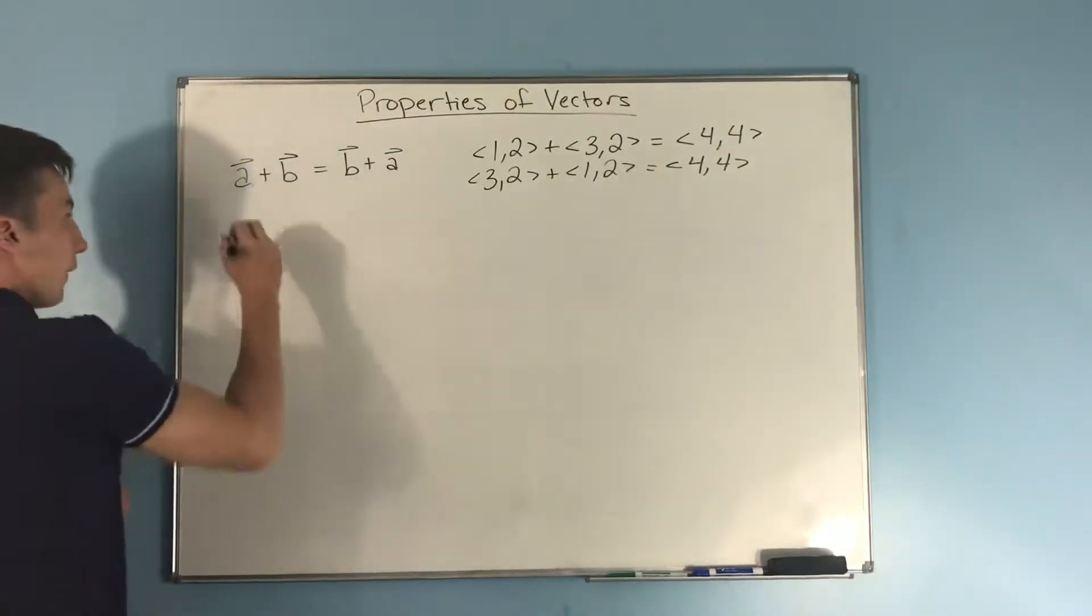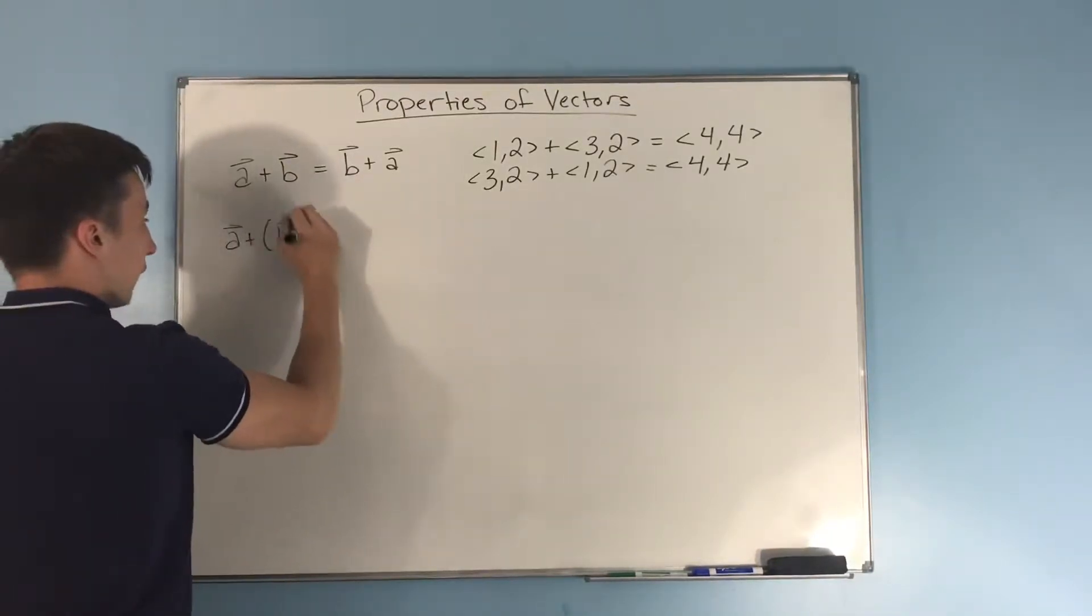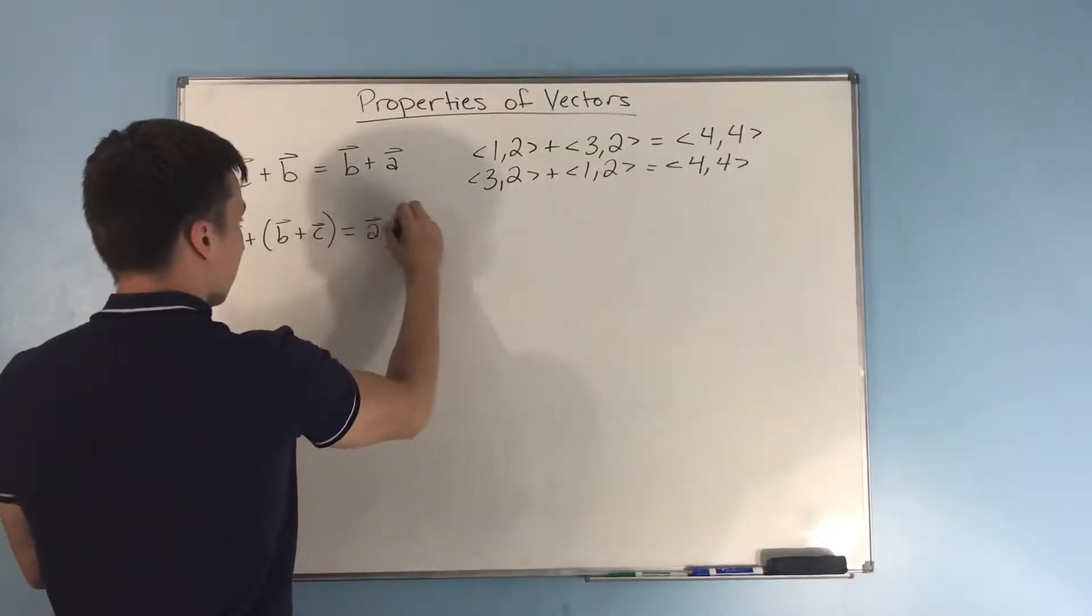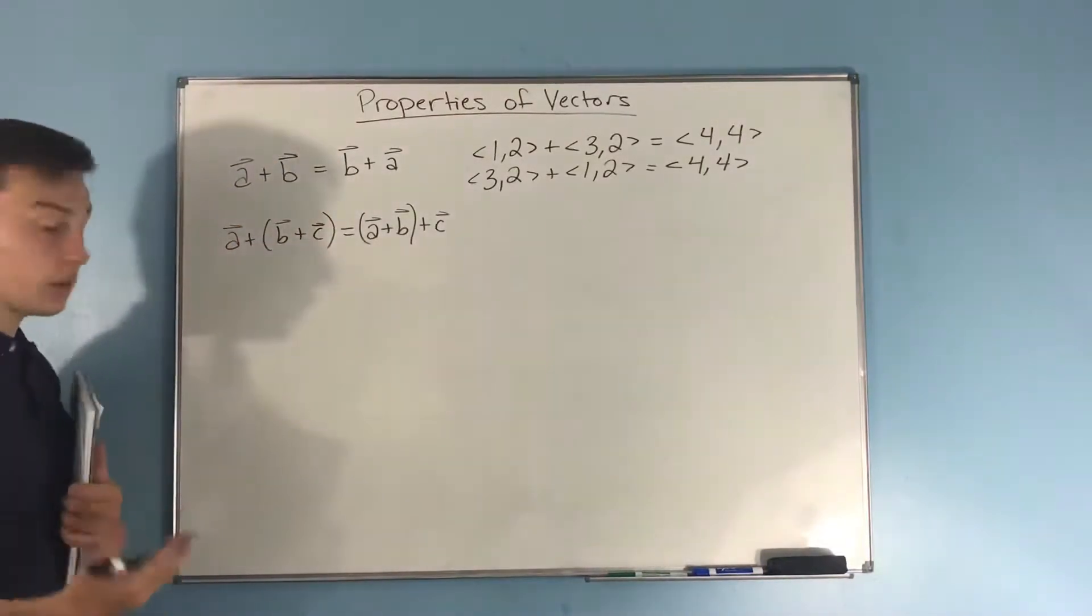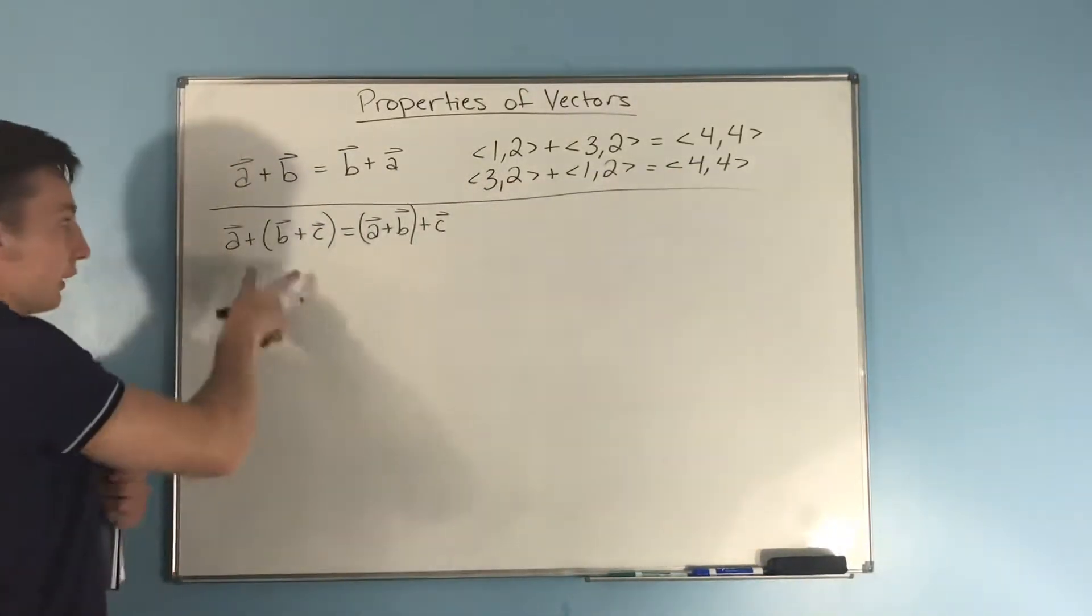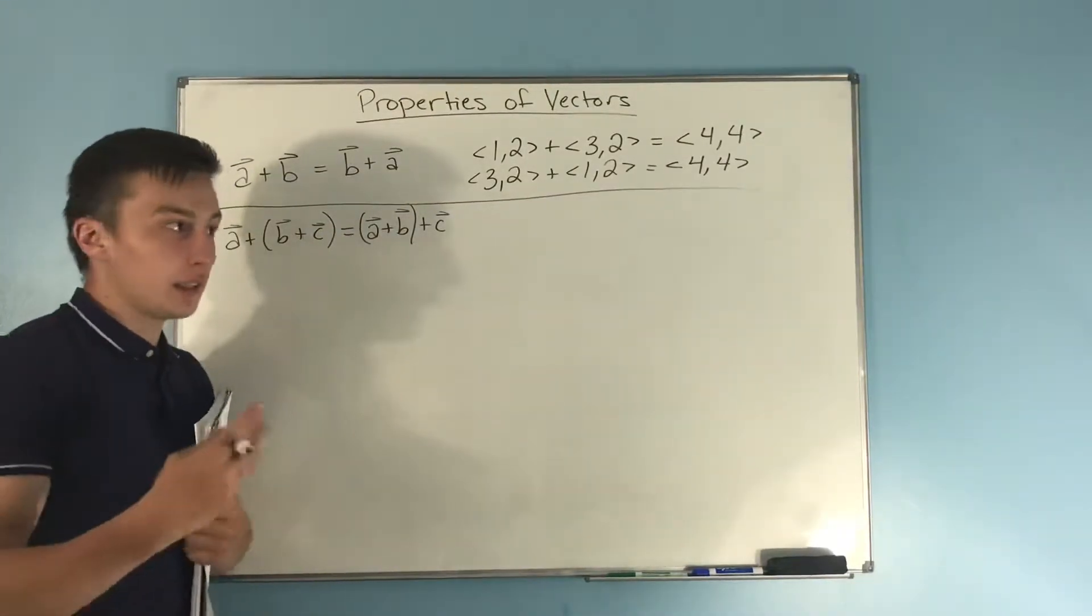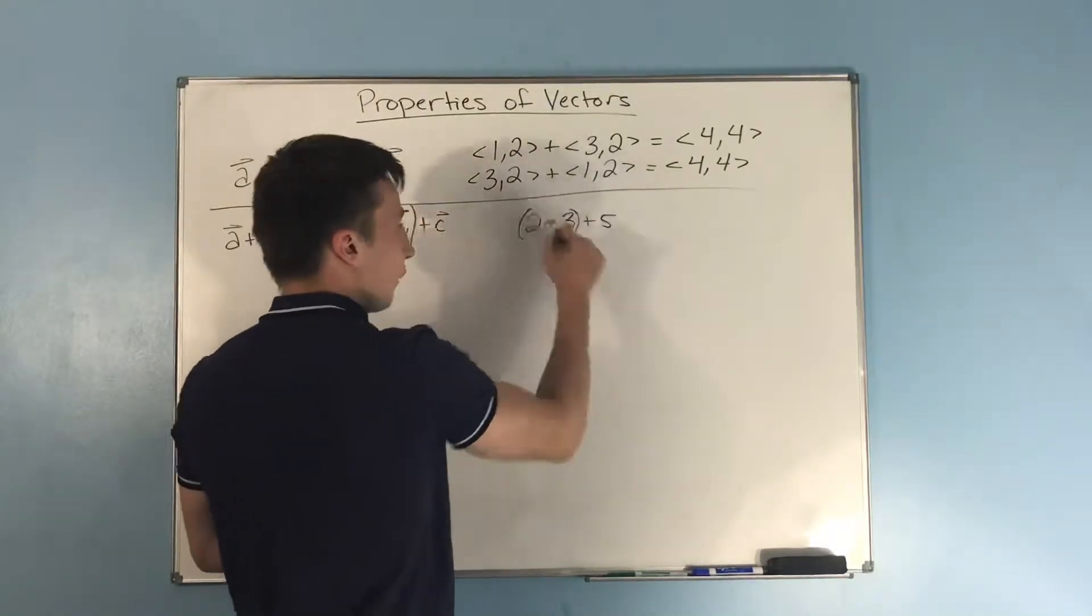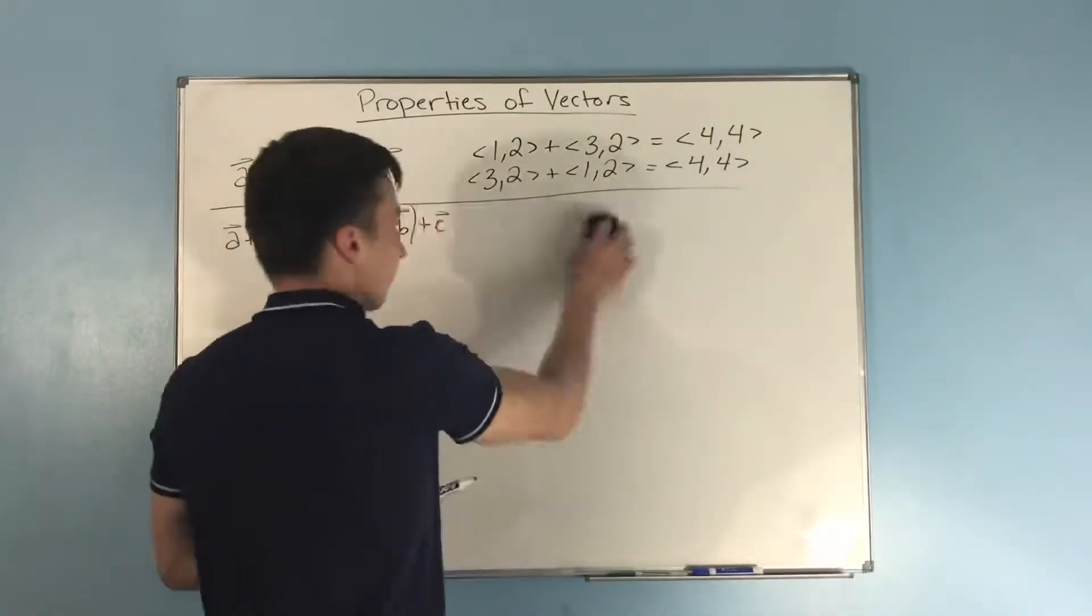Next we have A plus vector B plus vector C is equal to A plus B in parentheses plus vector C. Now this also makes sense, because it doesn't matter what order we add the vectors, just as it doesn't matter if we do 2 plus 3 first, or if we do 3 plus 5 first. We still get the same exact answer.